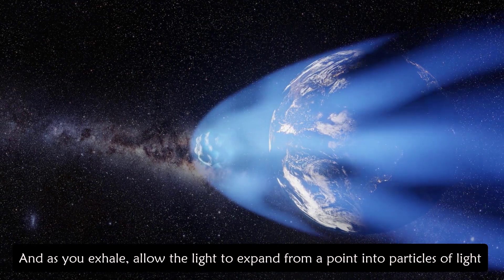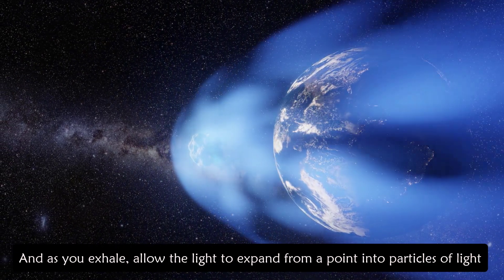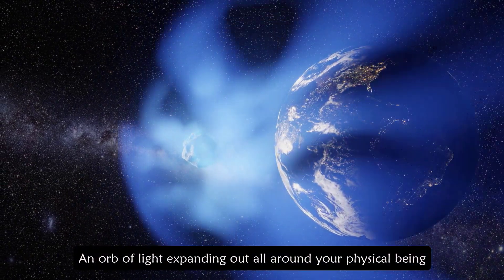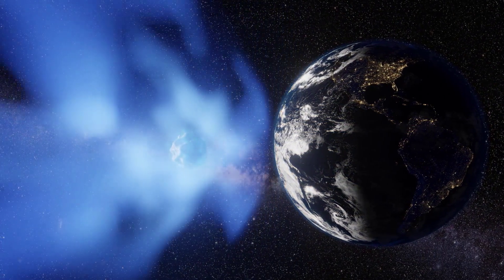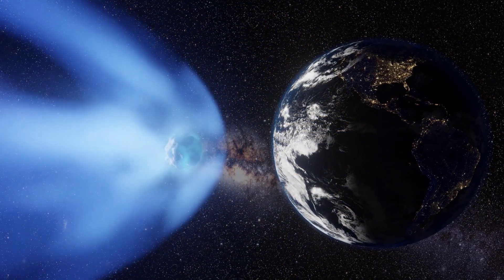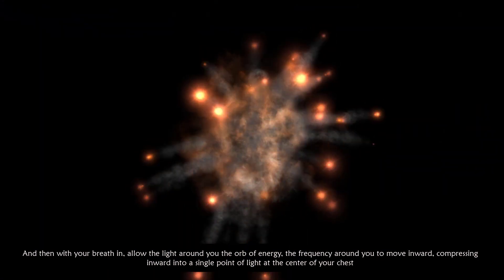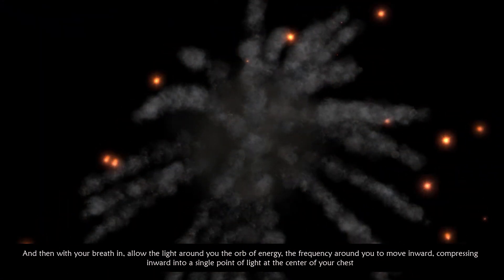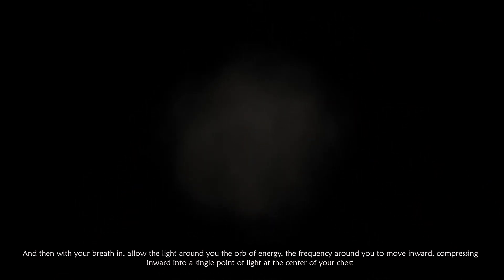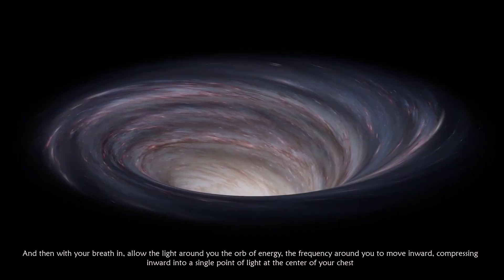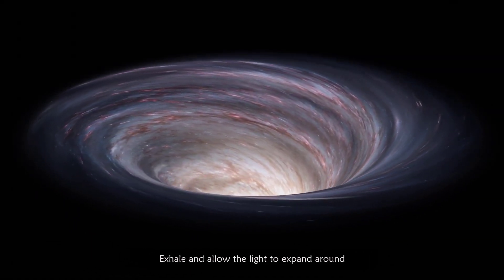And as you exhale, allow the light to expand from a point into particles of light, an orb of light expanding out around your physical being. And then with your breath in, allow the light around you, the orb of energy around you, to move inward, compressing inward into a single point of light at the middle of your chest. Exhale and allow the light to expand around you.